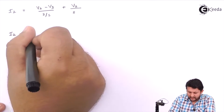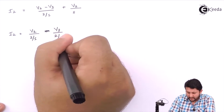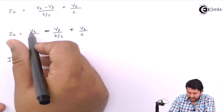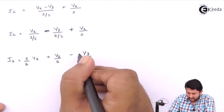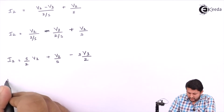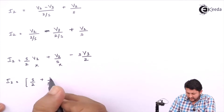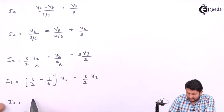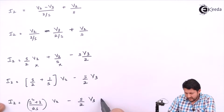Let's find I2 by rearranging. I2 will have terms: V2 upon 2 over s, minus V1 upon s, plus V2 upon s. Simplifying further, this becomes s upon 2 times V2, plus V2 upon s, minus V3 upon s. Collecting terms, we get the equation for I2 in progress.